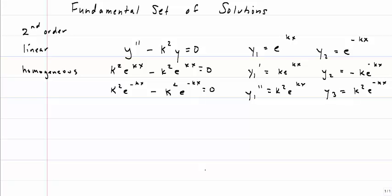So both y1 and y2 are solutions of this differential equation. However, what we're going to do now is build what we call a fundamental set of solutions. That is, the solution y(x) is equal to some constant c1 times the first solution, y1, plus c2 times the second solution, y2.